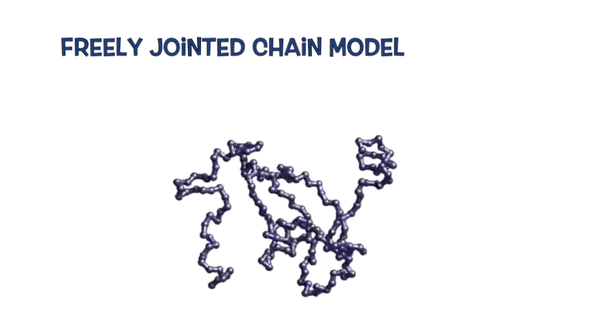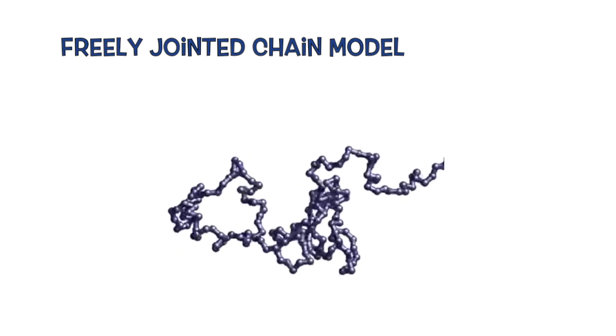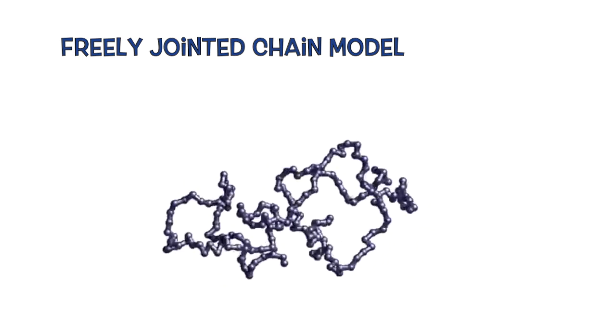This simulation shows the effect of all the monomers in a polymer undergoing Brownian motion. The result is a polymer that is constantly wiggling around and able to fold itself in an infinite number of ways.